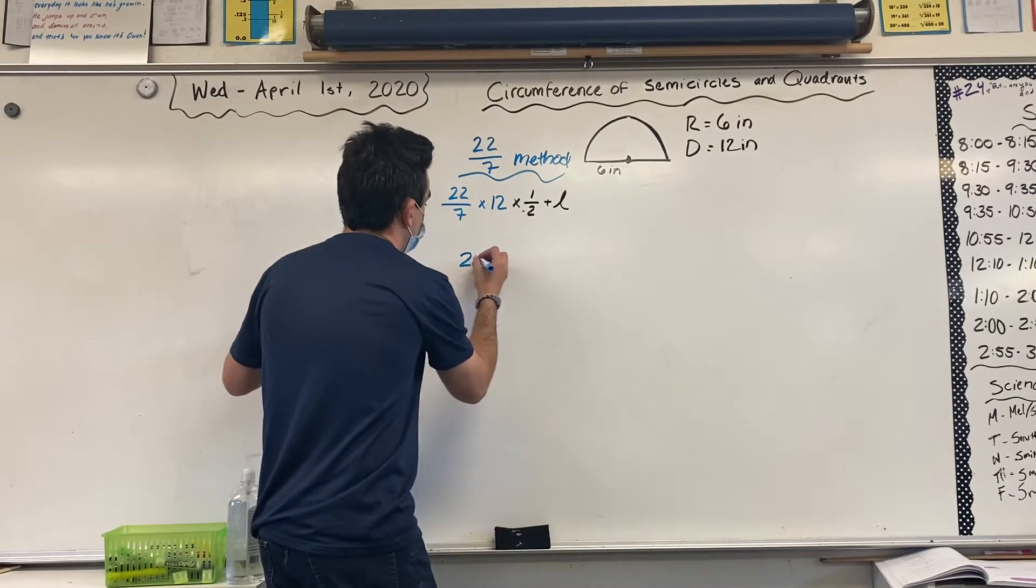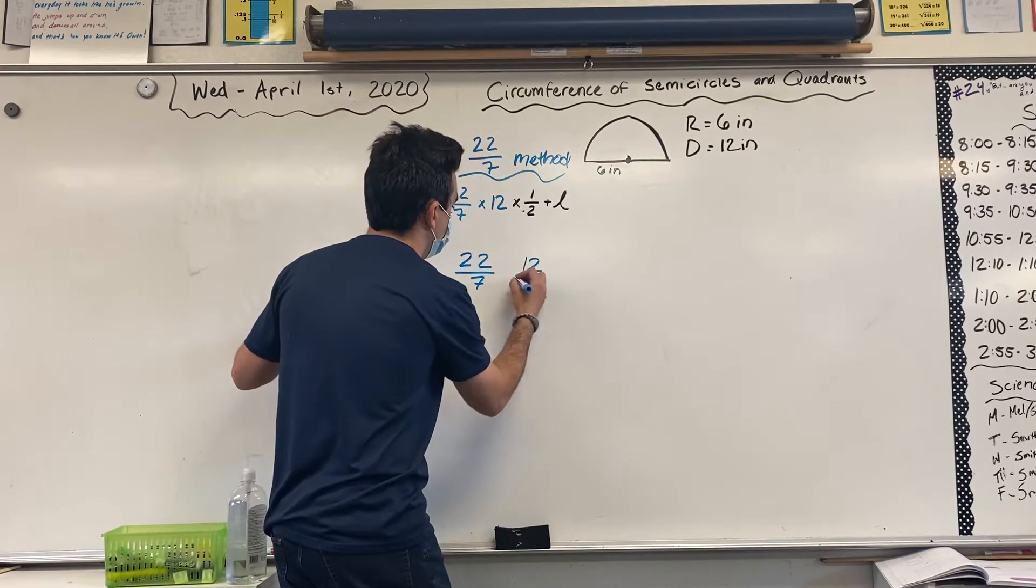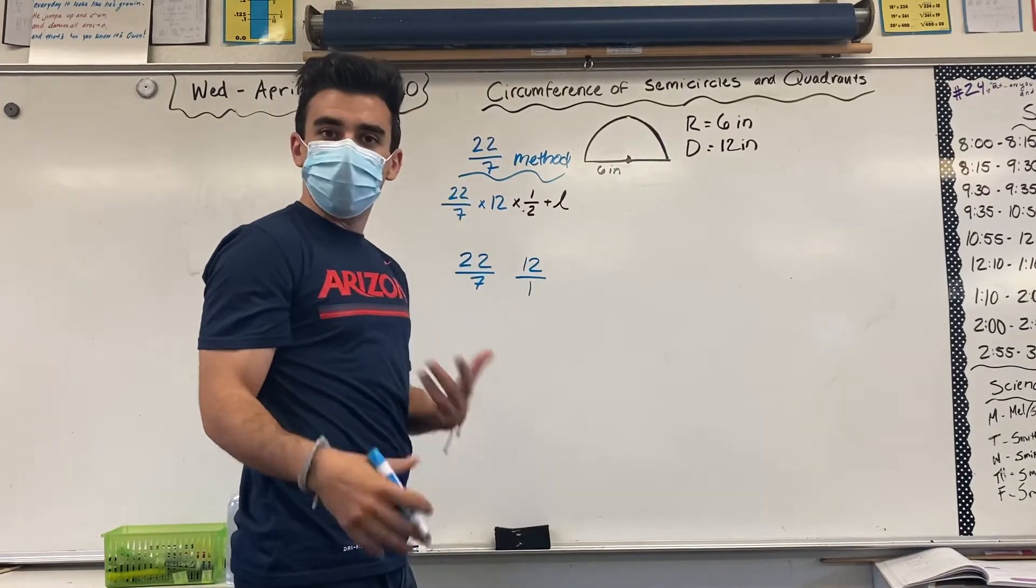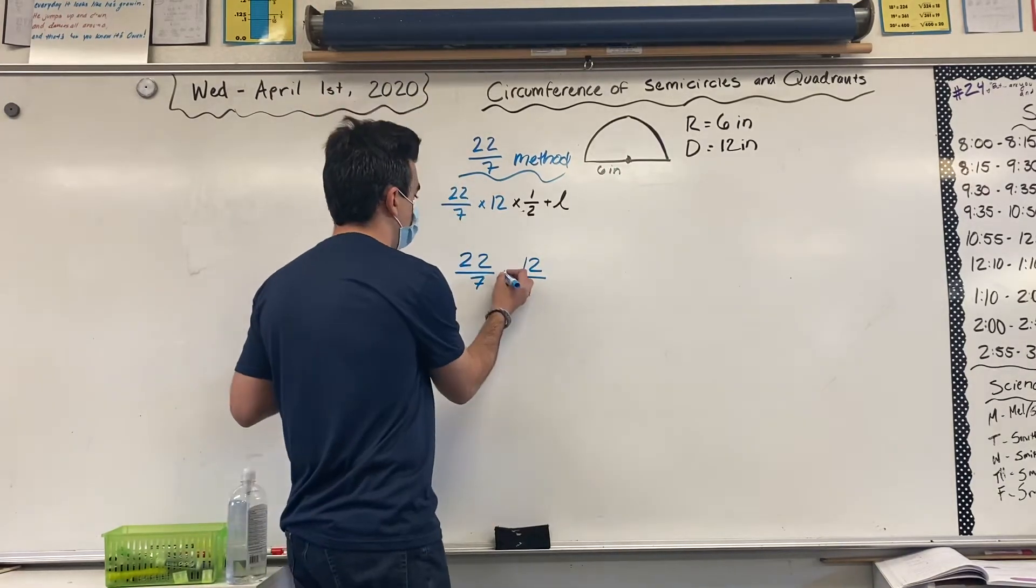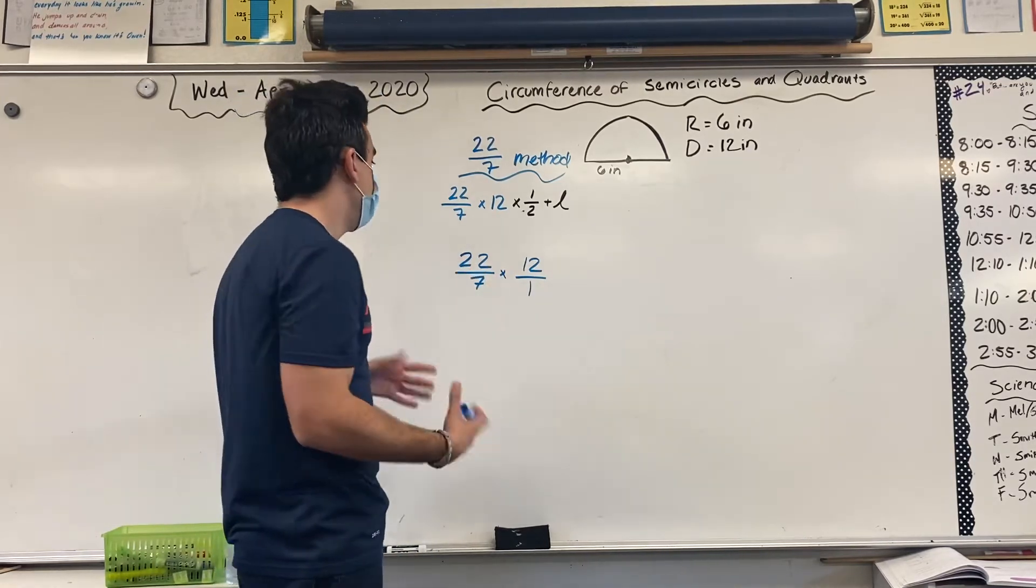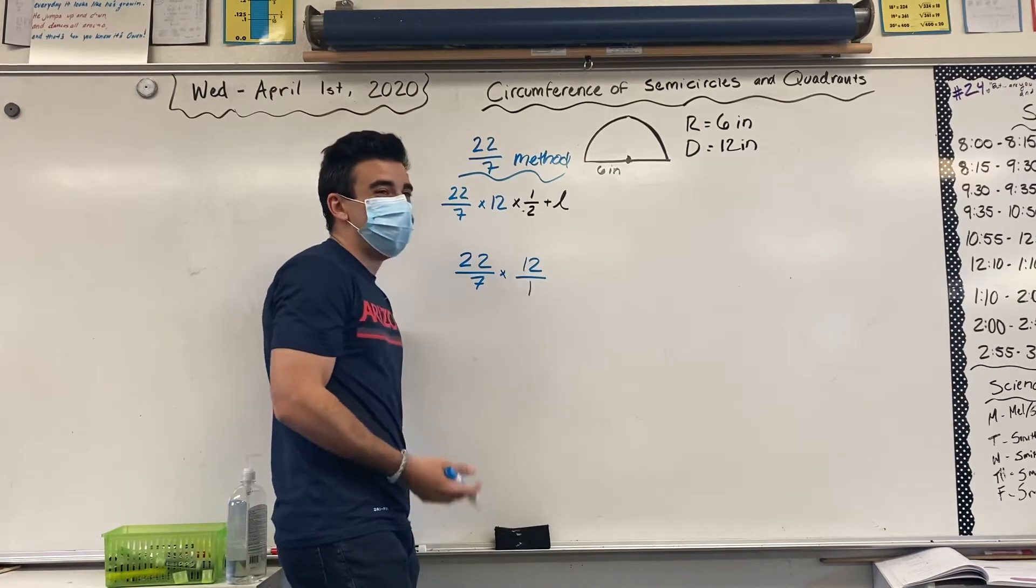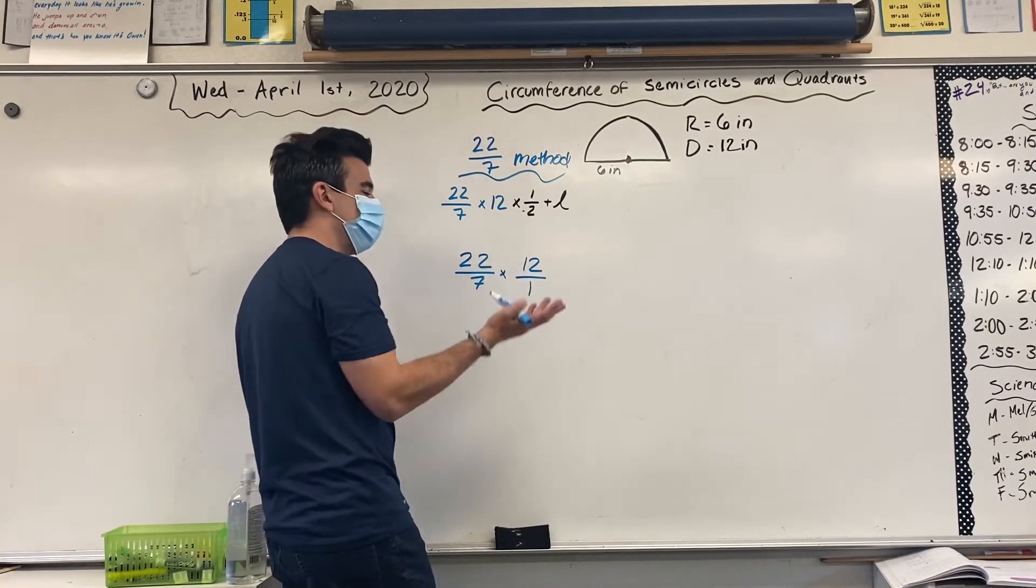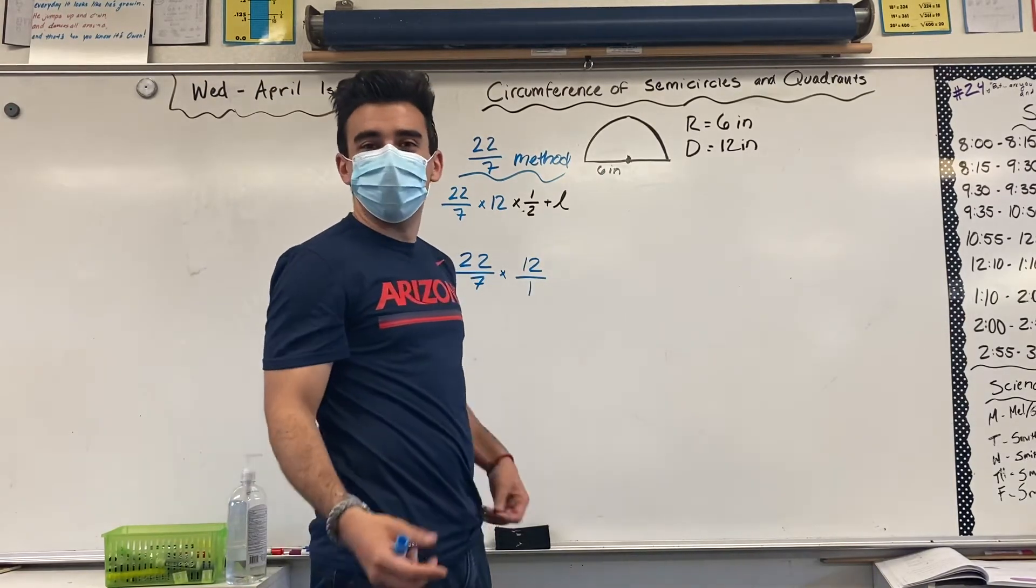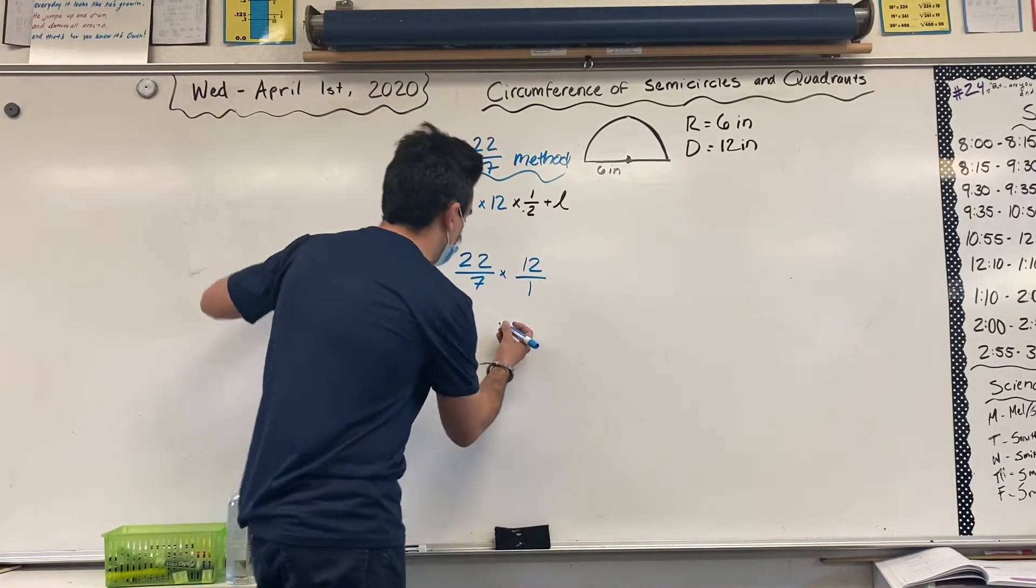I have 22 over 7 and 12 over 1. Remember that trick I taught you when we were doing the review of circumference of a circle, cross-simplifying? Well, sadly, I ain't cross-simplifying, excuse me. Sadly, that won't work this time, because 7 and 12 don't share any common factors except for 1, which won't work. 22 and 1, same thing. Only common factor is 1. So, we are going to have to multiply across.